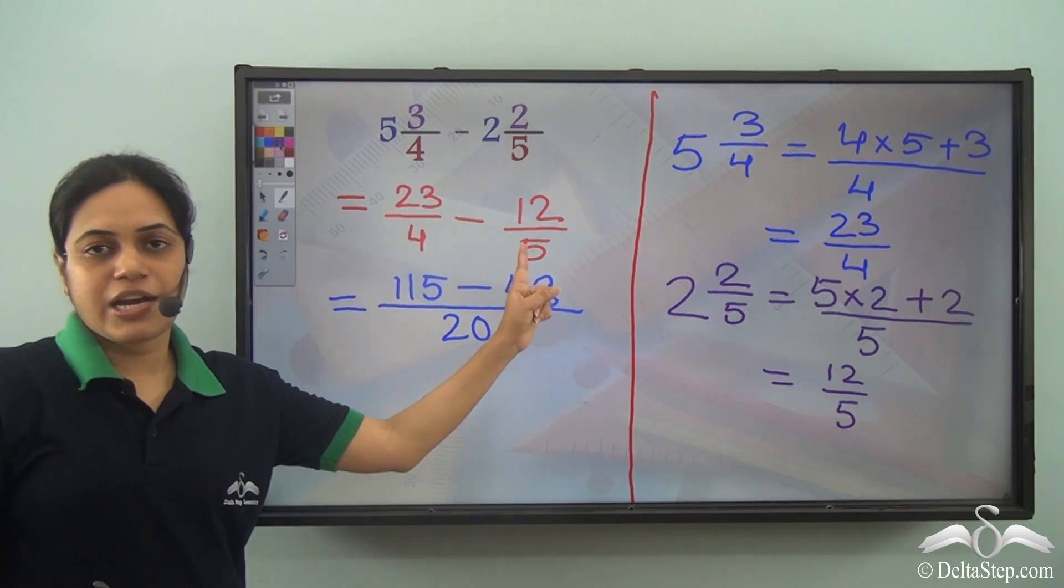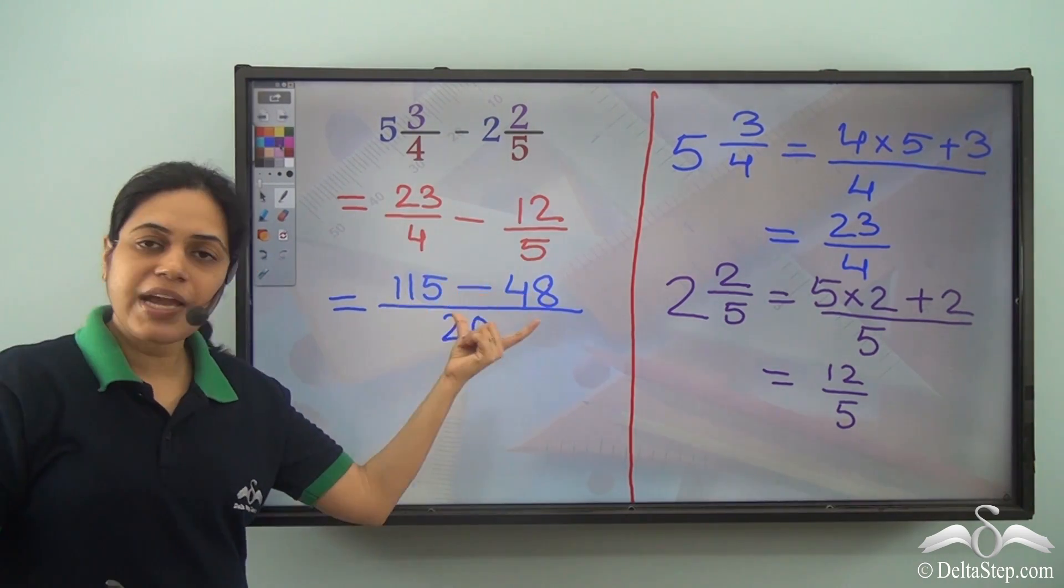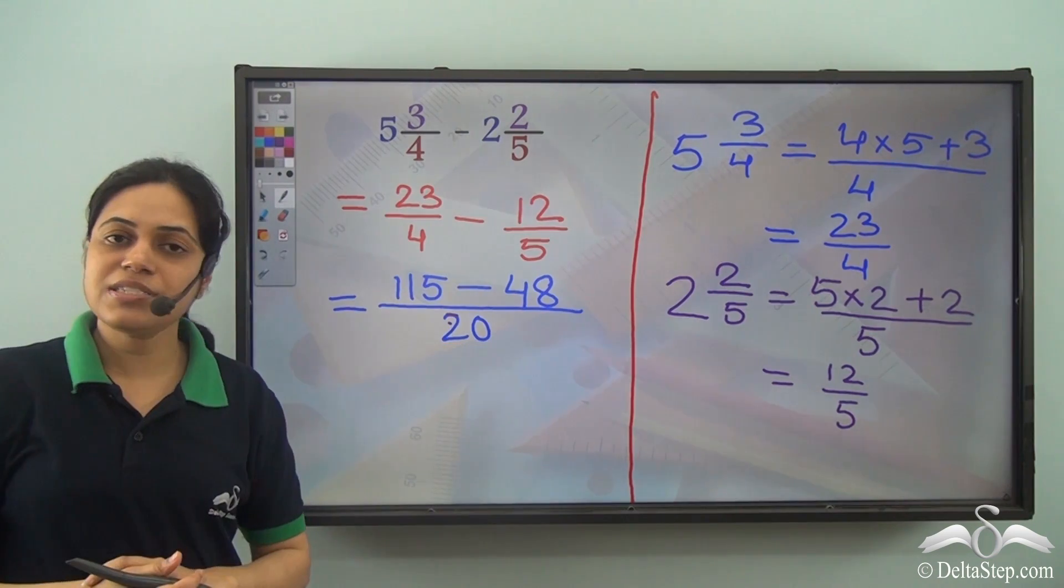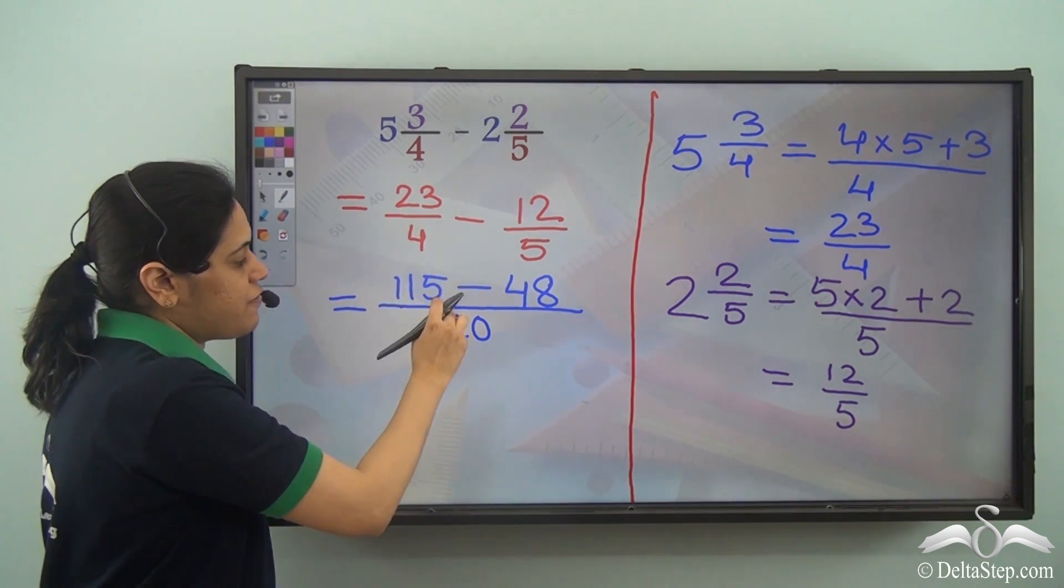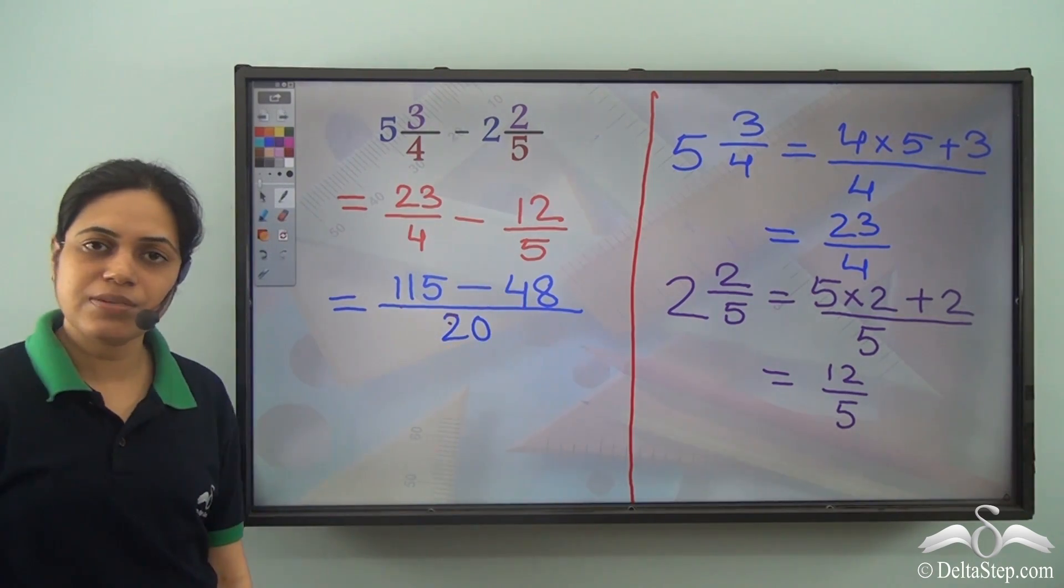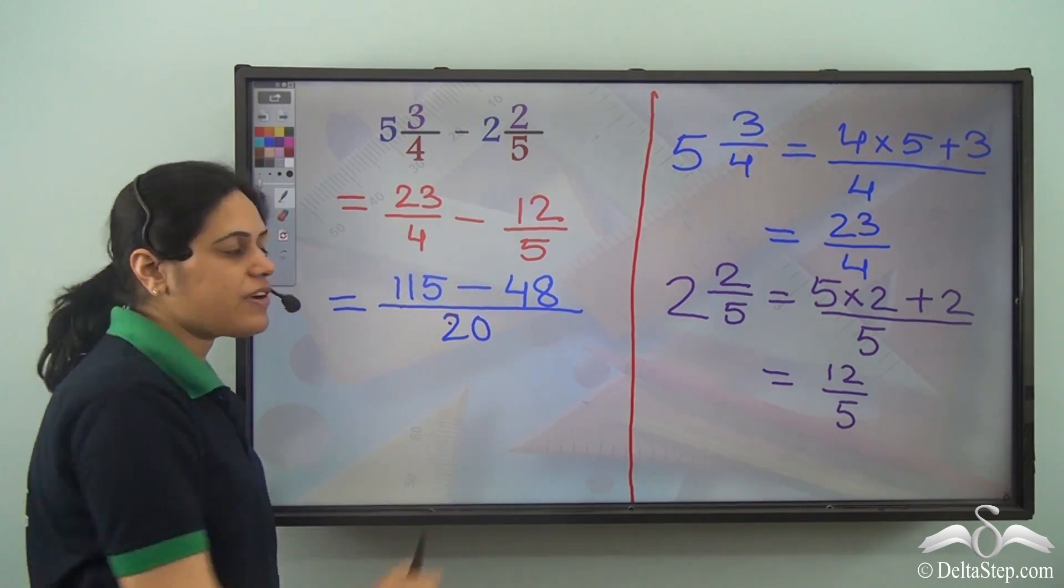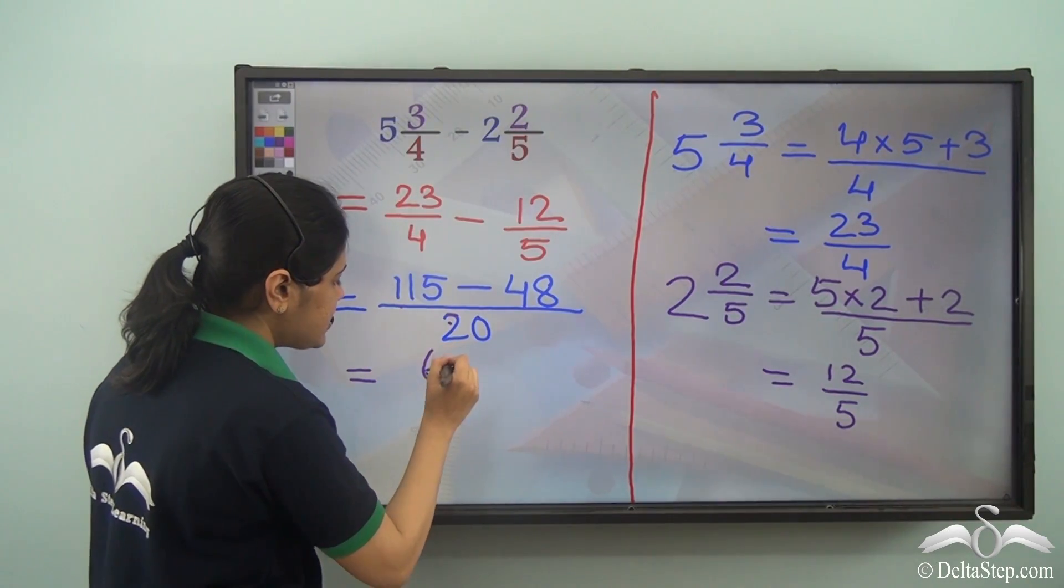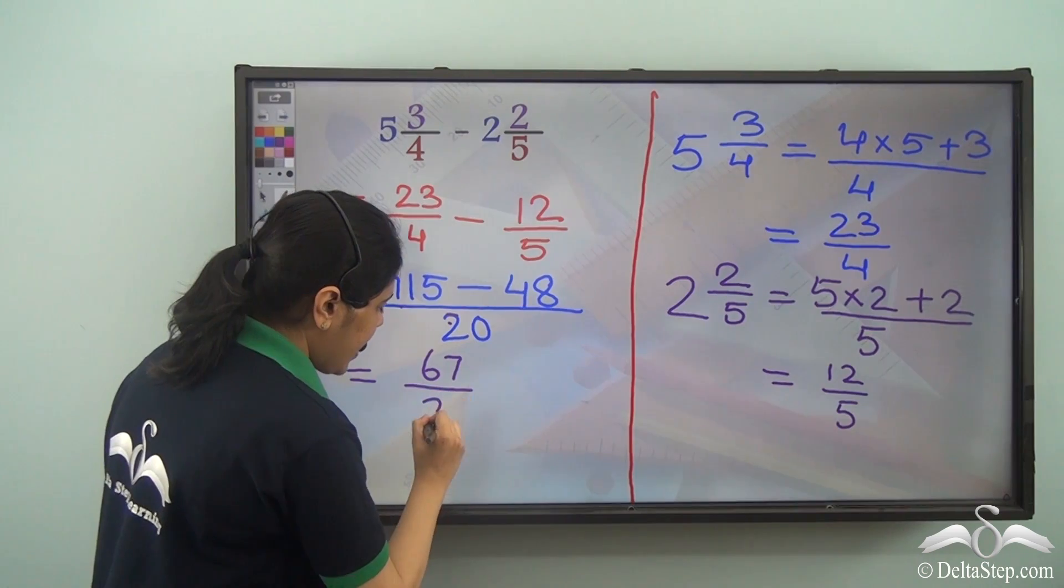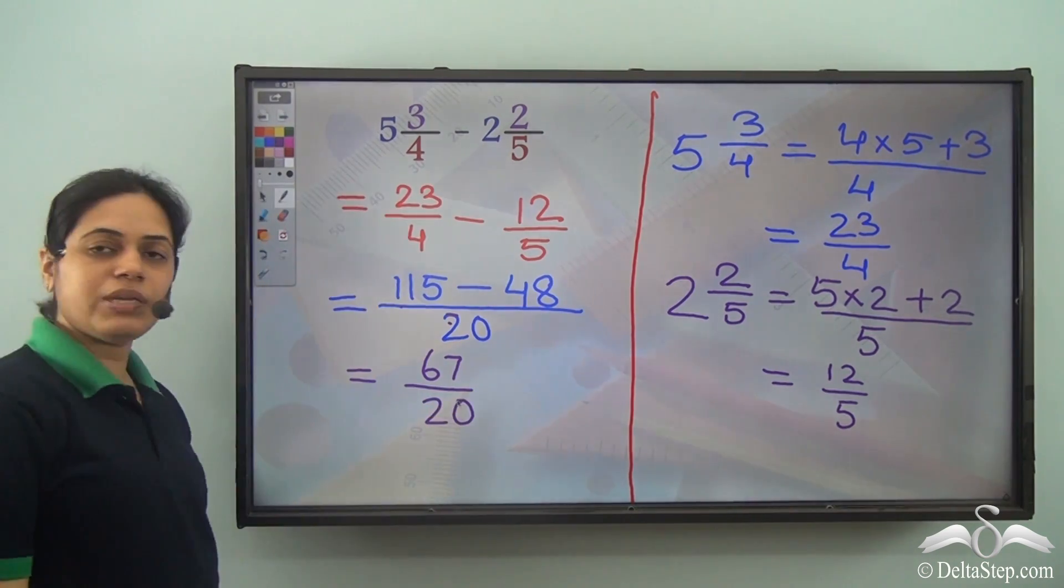Now, since this is subtraction, I need to subtract the numerators. That is why there is this subtraction sign here. So I need to have 115 minus 48. Now what is 115 minus 48?